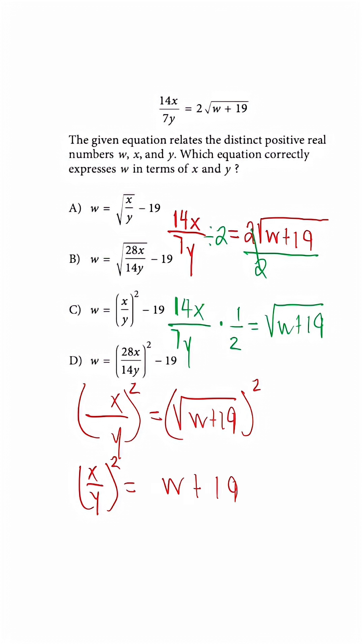And to get W by itself, we just need to subtract. So we have x over y squared minus 19 is equal to W, and that would give us an answer choice of C.